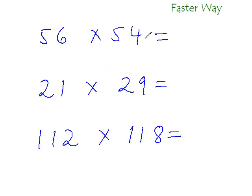So what is 56 times 54? After 5, the next number in the counting is 6, so 6 times 5 is 30. And for the last two digits, just find the product of the units digits. So 6 times 4 is 24, so the answer is 3024.